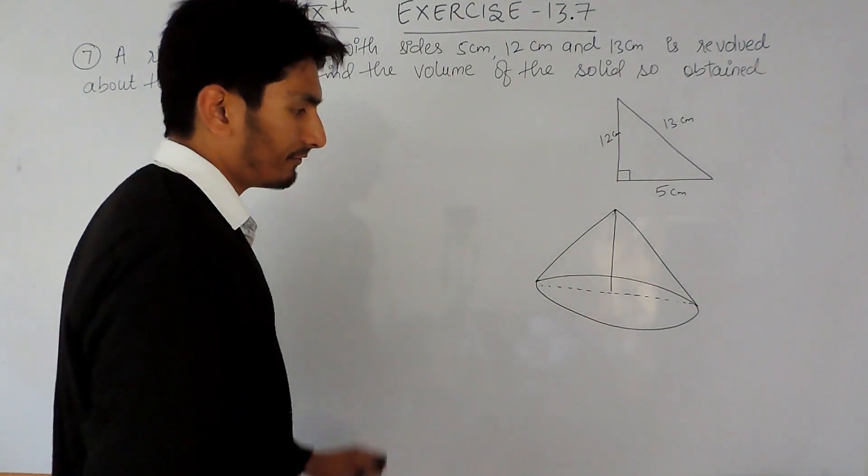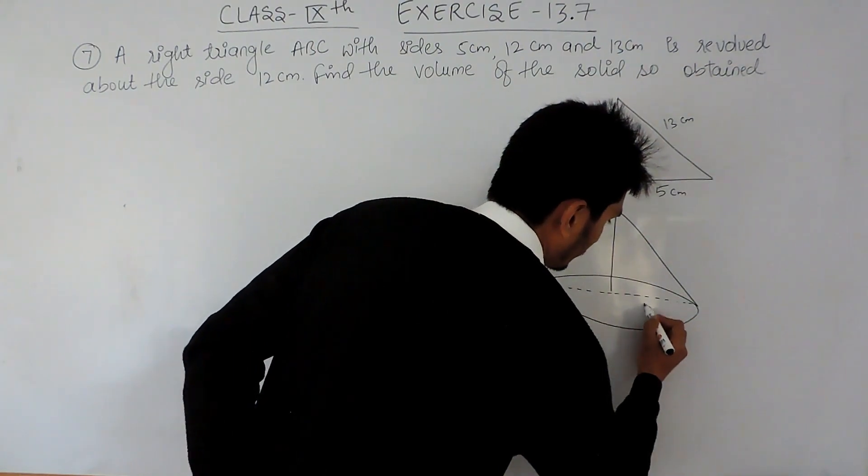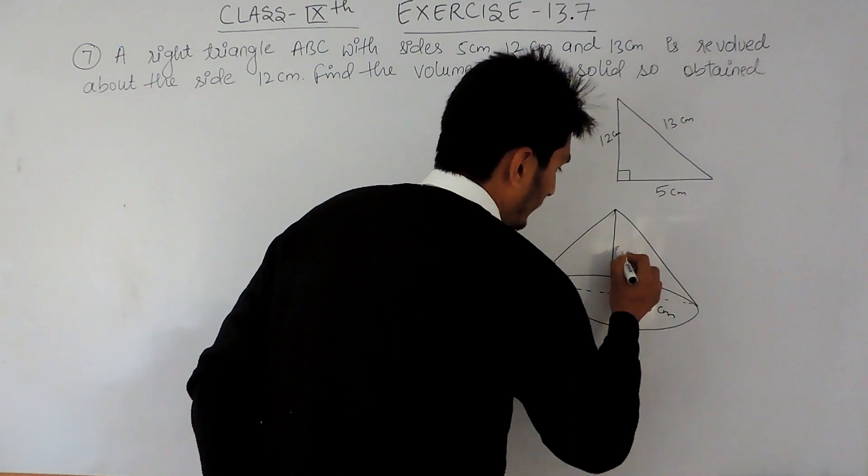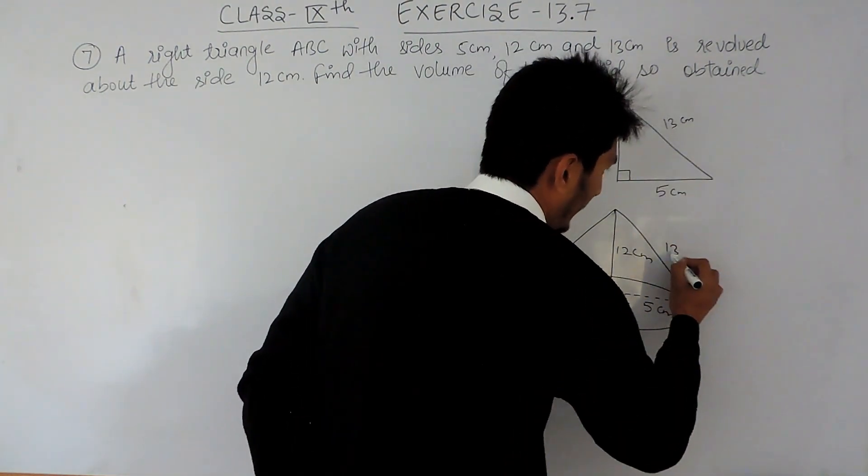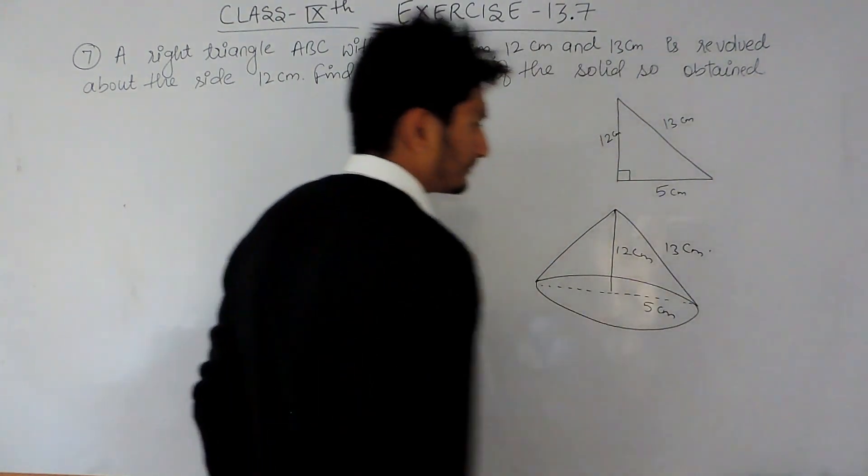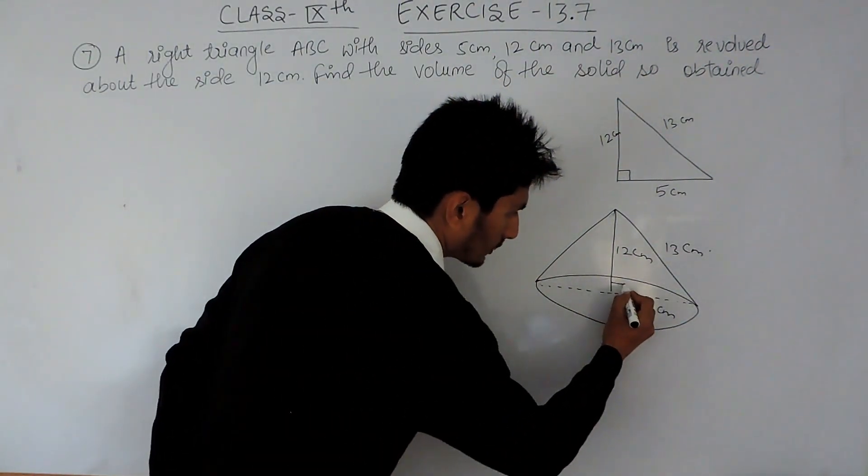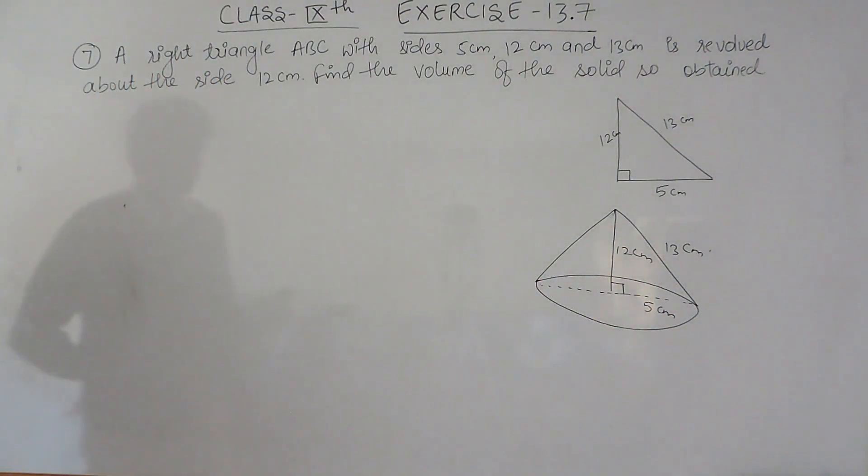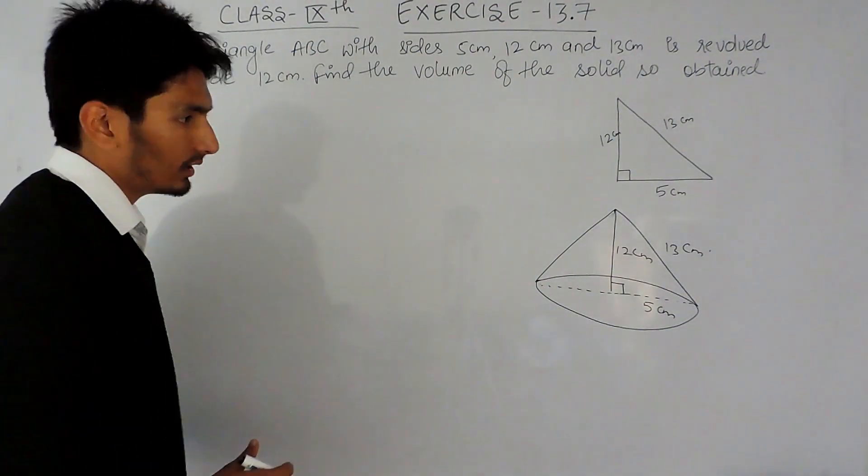The figure formed will look like this, where this is the radius of the base, this perpendicular will act as the height, and hypotenuse will act as a slant height for this cone. Now I have to find the volume of this solid, so obviously you can mention the given things.